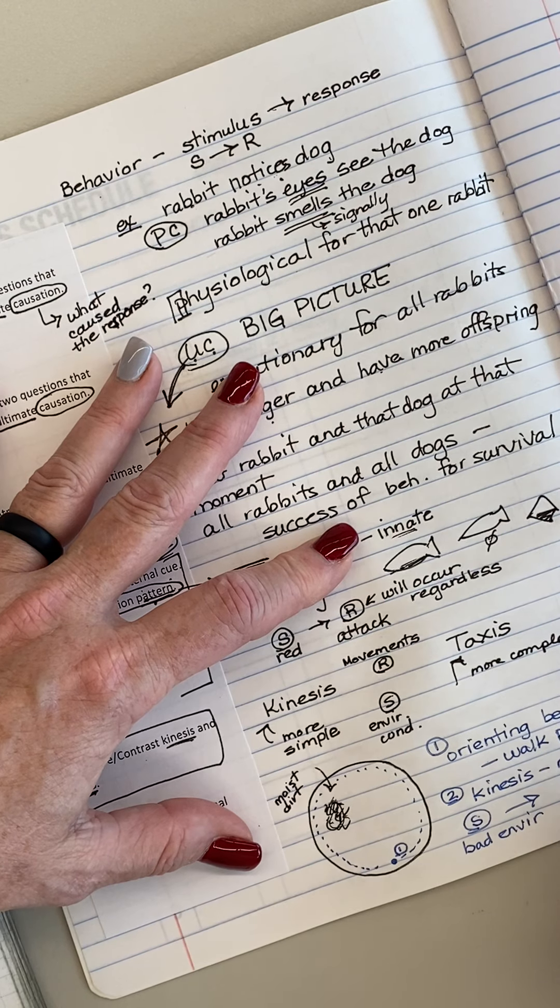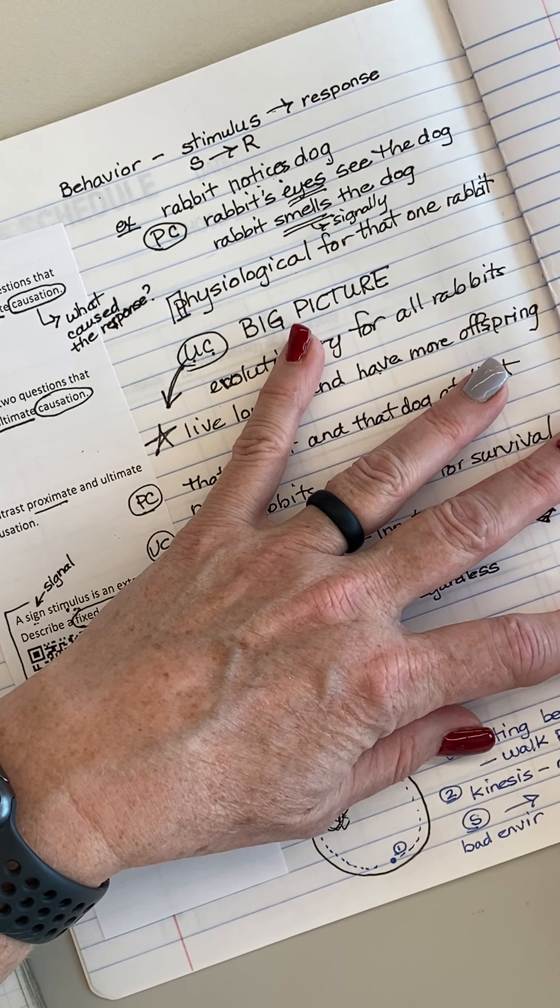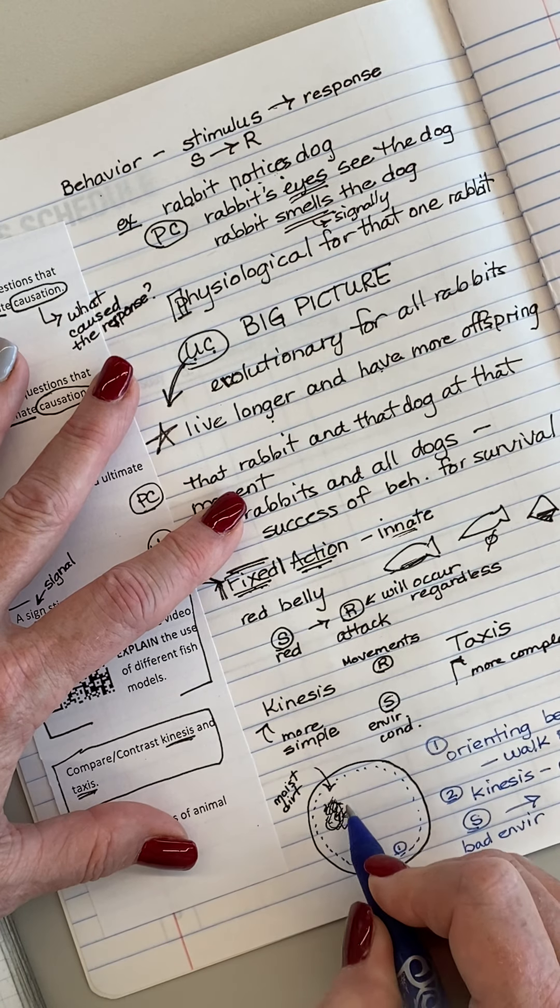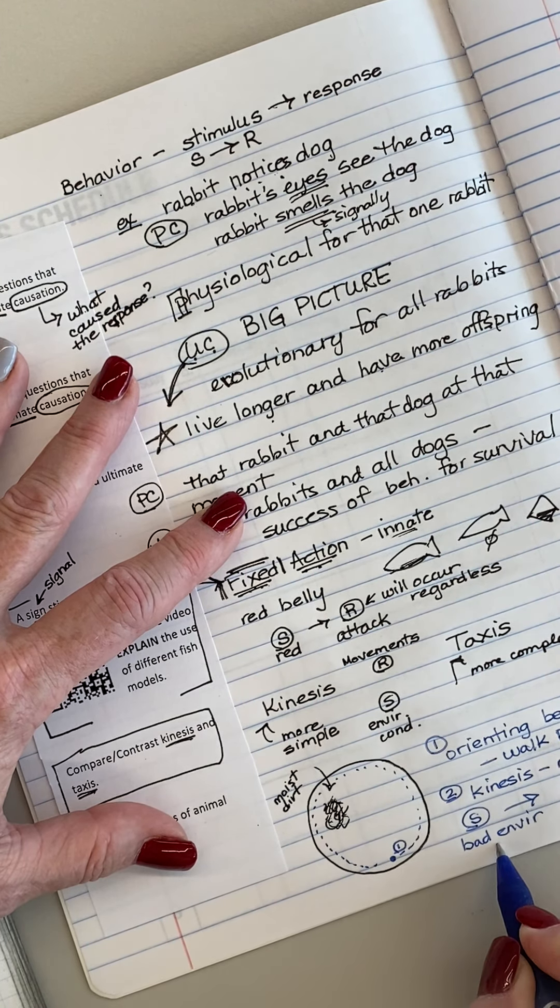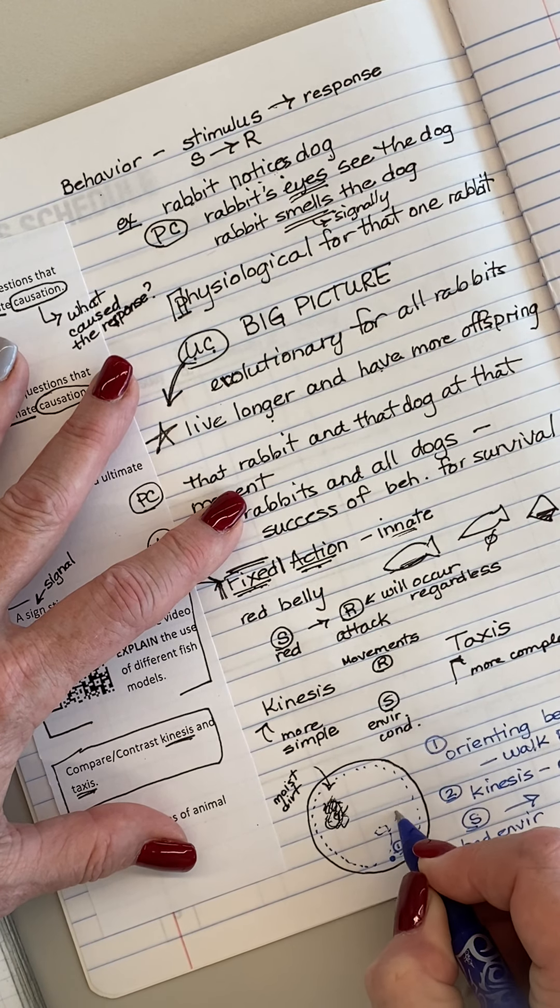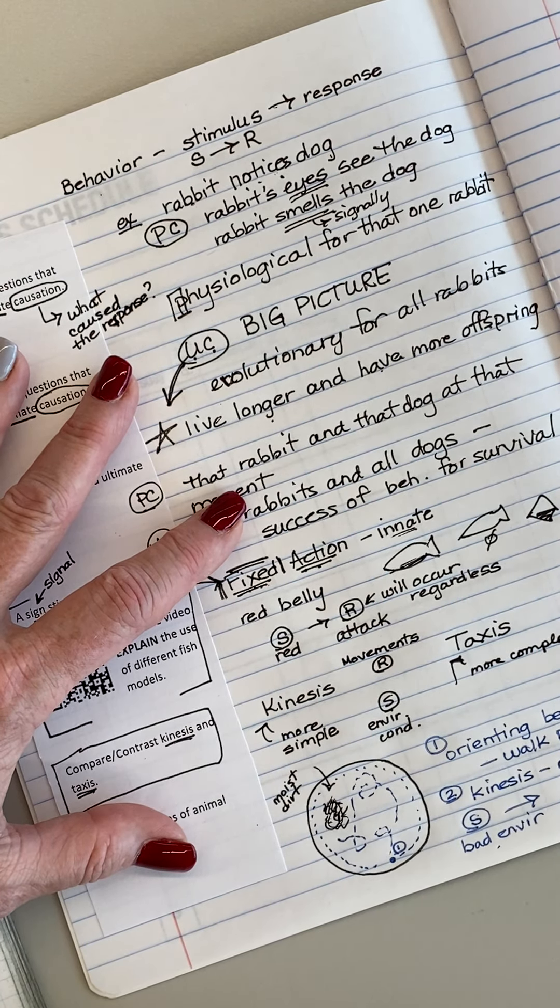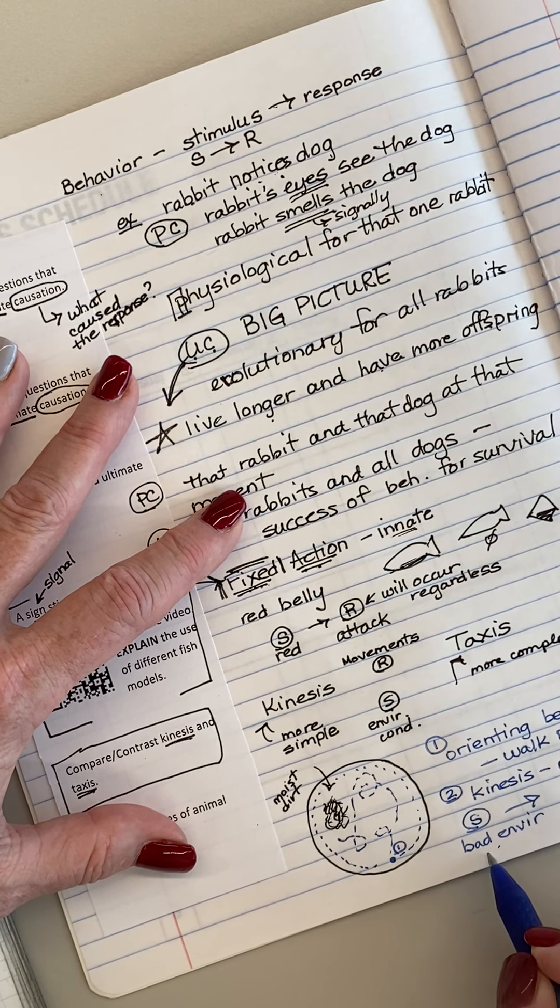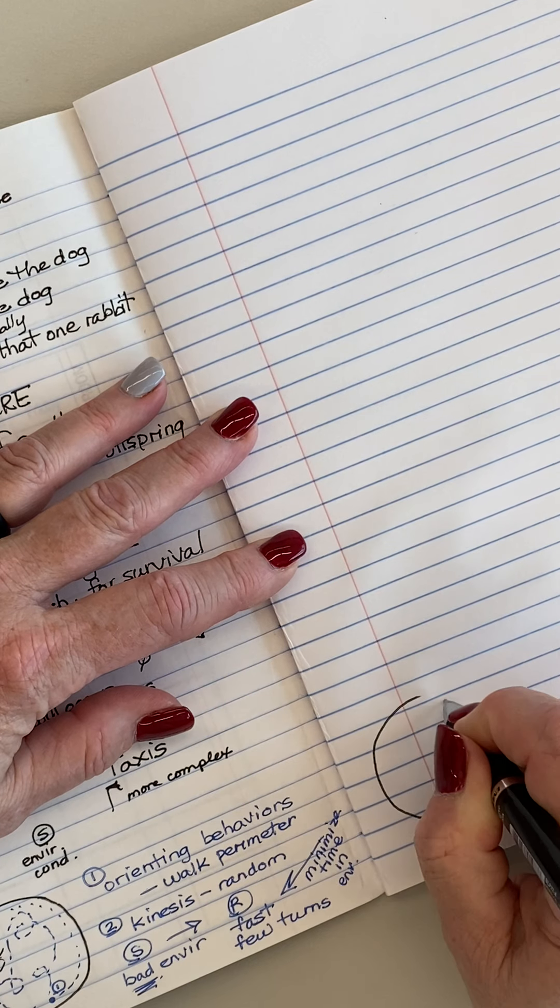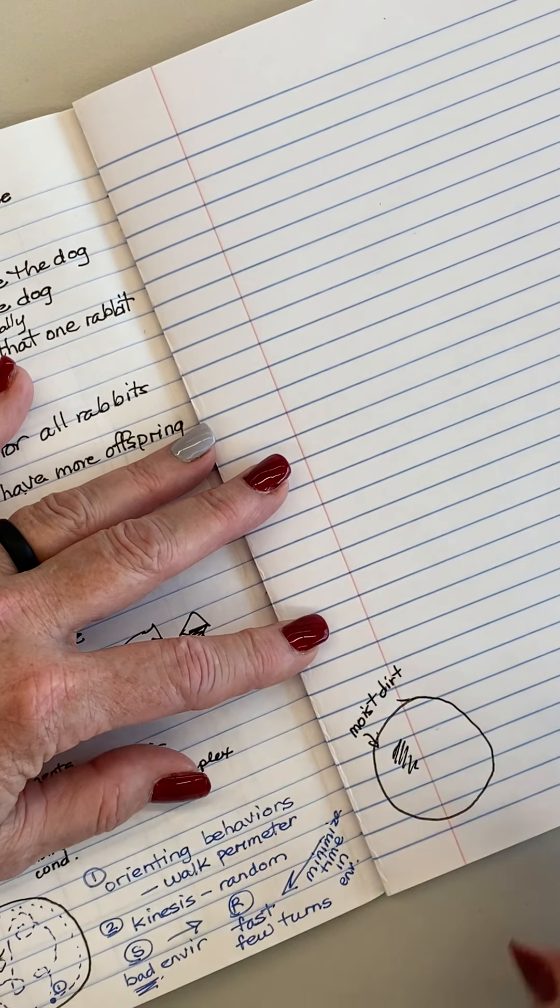So it would probably start by walking like this. Okay, so that's movement one. Once the orienting behavior has occurred, then we're going to move to kinesis. Kinesis is a random movement. So the pill bug, when the pill bug perceives the stimulus of bad environment, the response type of movement is to be fast and to have few turns. So what this does, this right here, is going to minimize the time in that environment.